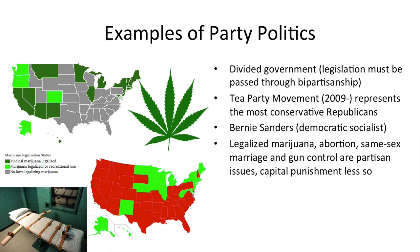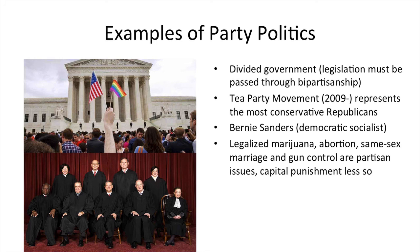Marijuana legalization, abortion, same-sex marriage, and gun control are typical partisan issues where Democrats and Republicans — or at least liberals and conservatives — take very different positions. Capital punishment is less of a partisan issue. Most of these issues are states' rights matters, which is why some states have legalized marijuana and others haven't, and some states have banned the death penalty while others have not. The federal government generally doesn't deal with many of those things, although the U.S. Supreme Court can — for instance, in 2015 it decided that same-sex marriage would be legal in all states.